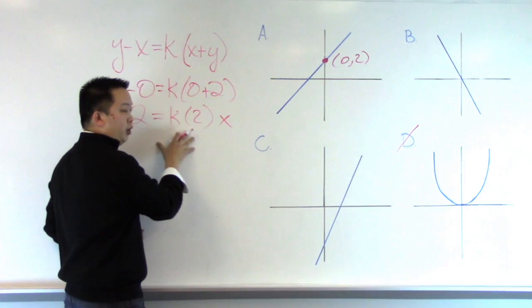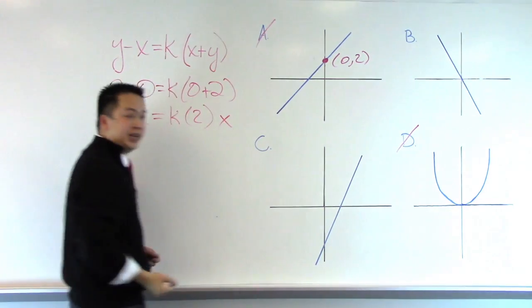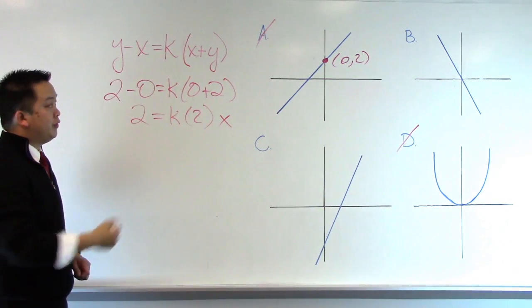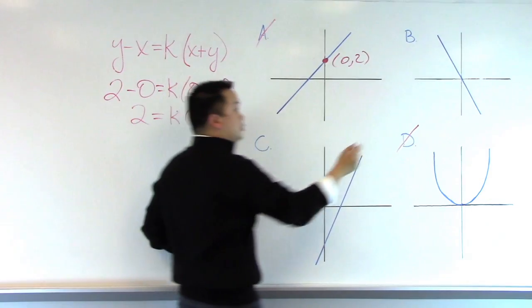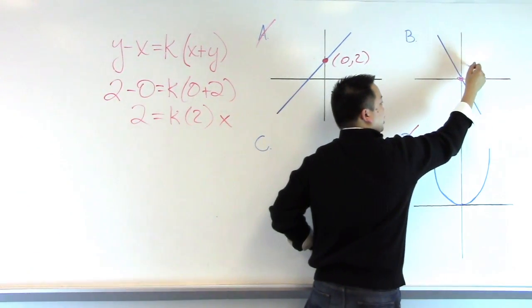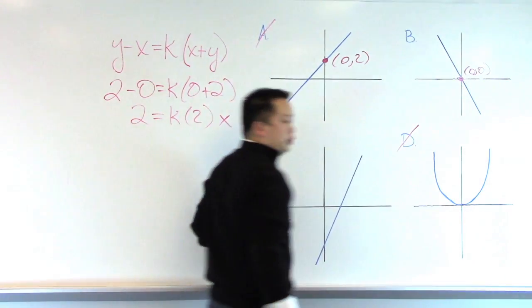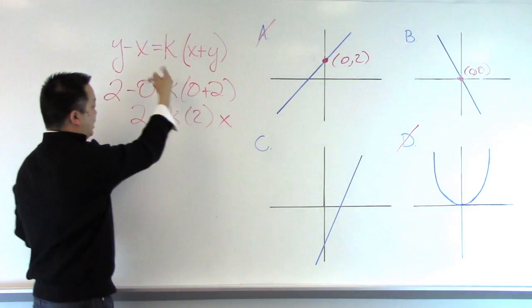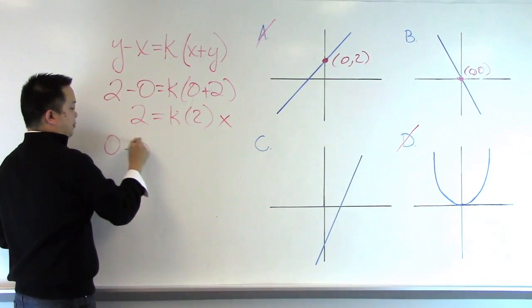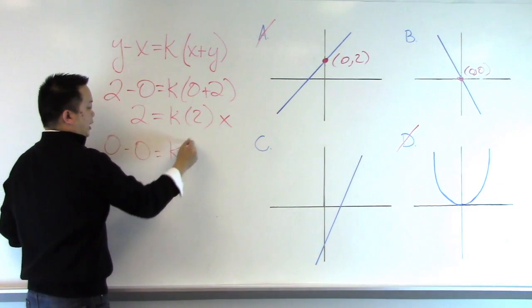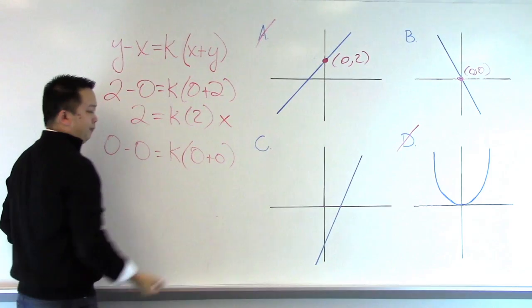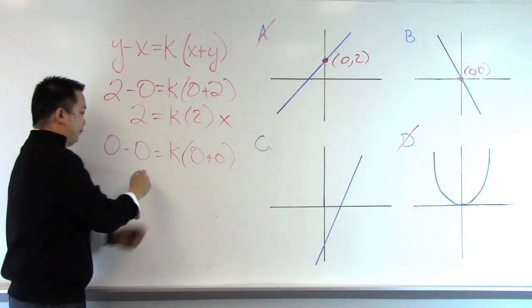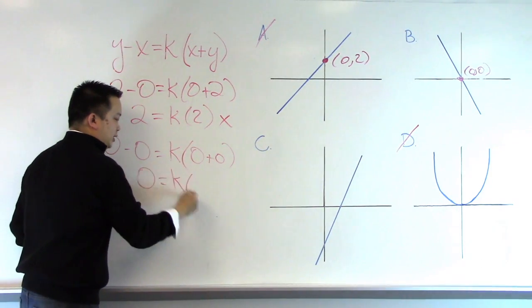Therefore, this equation does not work, and we can eliminate answer choice A. Moving on to answer choice B, we can use the very convenient point at the origin. When I use the ordered pair 0, 0, and plug that into the equation, we get 0 minus 0 is equal to k times 0 plus 0. Solving this equation now, we get 0 is equal to k times 0.